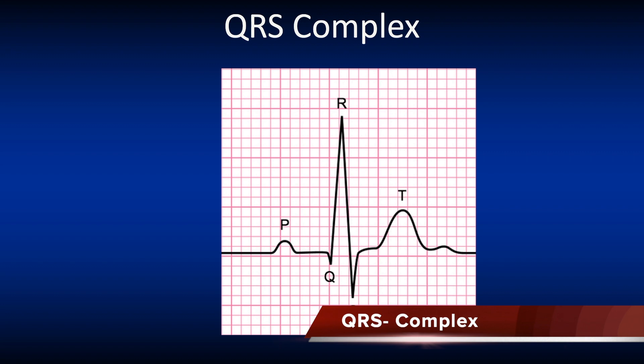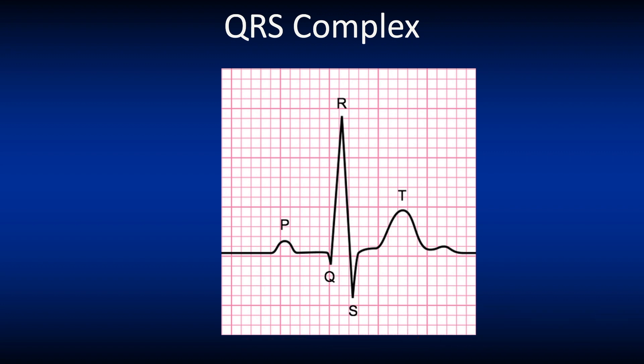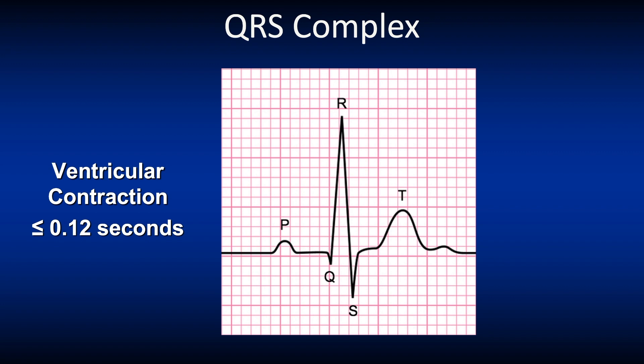The QRS represents the spread of electrical impulses through the ventricles, called ventricular depolarization. Normally it measures between 0.06 to 0.1 seconds or 1.5 to 2.5 small squares, but as default we use 0.12 seconds or 3 small boxes. If the QRS is prolonged — more than 3 small boxes — it means there's some sort of ventricular delay. We measure the QRS complex from the beginning of the Q wave all the way through the R and S waves.